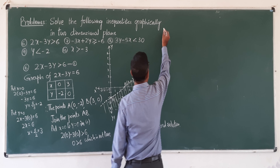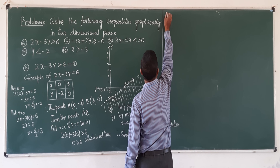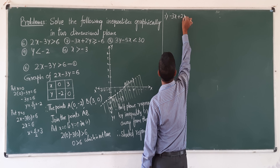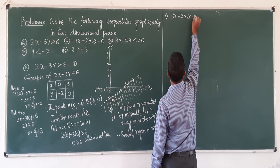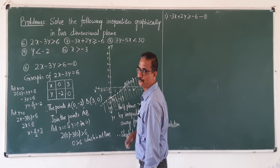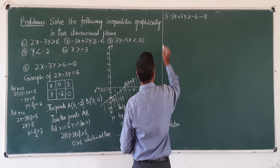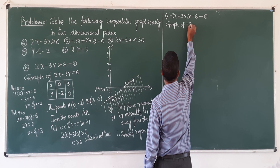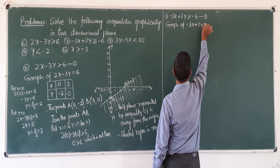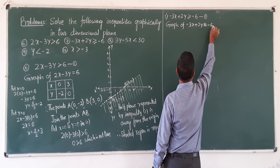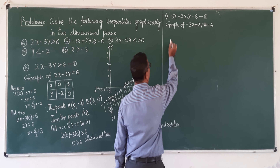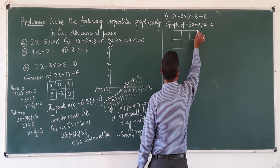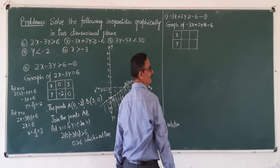Similarly, next problem — problem number 7: solve minus 3x plus 2y greater than or equal to minus 6. Draw the graph. First step: convert the given inequality into an equation — minus 3x plus 2y equals minus 6. Now, to find out the points, find x and y values.